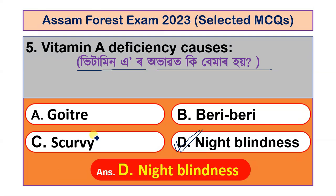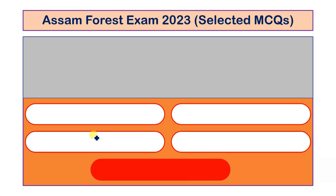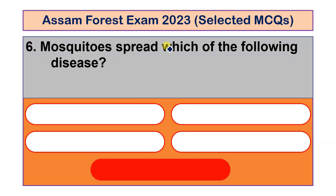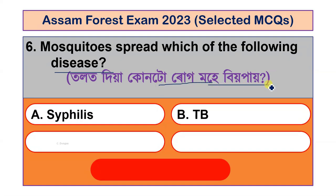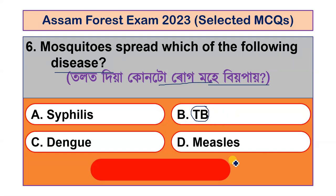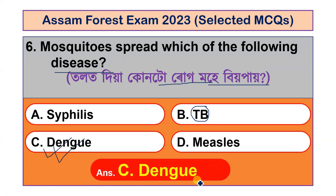Question number 6: Mosquitoes spread which of the following diseases? Options include syphilis, TB, dengue and measles. The correct answer is dengue.